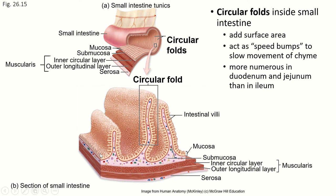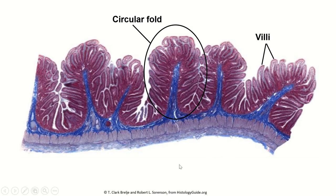Notice that the mucosal layer is folded and the submucosal layer folds with it, but the muscularis doesn't fold. This is what it looks like on a microscope slide — here's the muscularis externa, this is the mucosa, and this layer here is the submucosa.